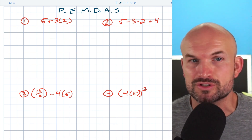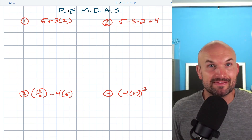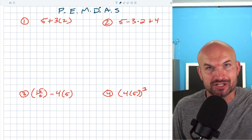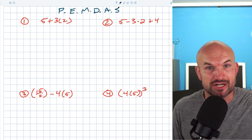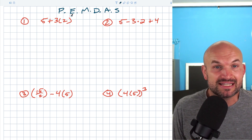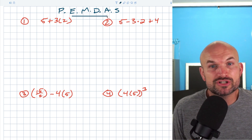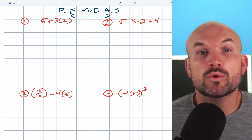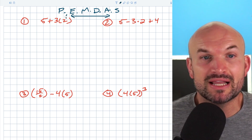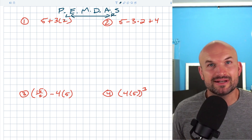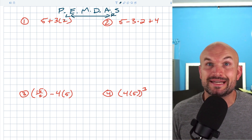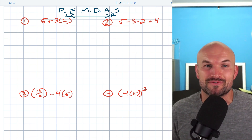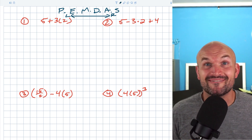You just have to make sure you're following the rules correctly, working from parentheses, exponents, multiplication, division, addition, and subtraction. When doing multiplication and division or addition and subtraction, we work from left to right. We'll definitely explore that as we get through these examples. I'm going to do 14 examples for you so we can get right into it.